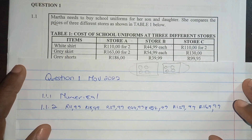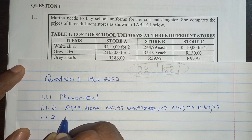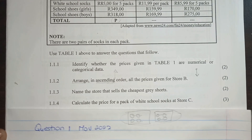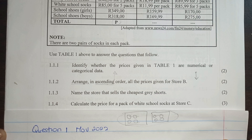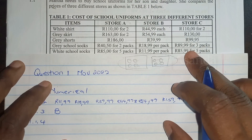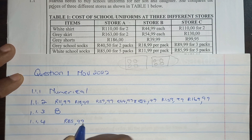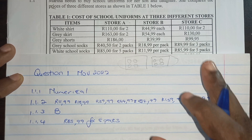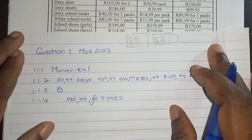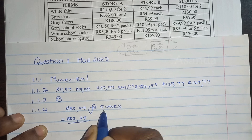Question 1.1.3: Name the store that sells the cheapest gray shorts. Store B is the cheapest. Question 1.1.4: Calculate the price for a pack of white school socks at store C. Store C has white school socks at 85.99 for five packs.